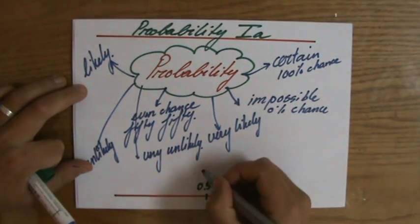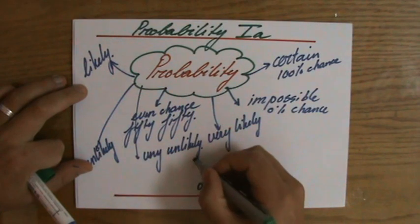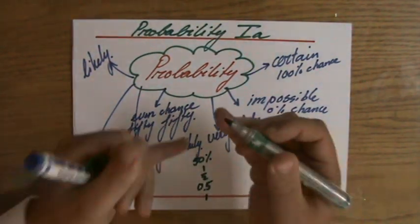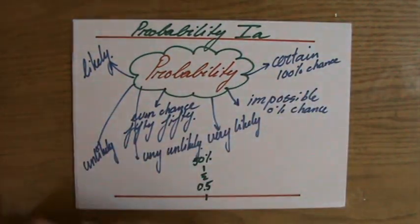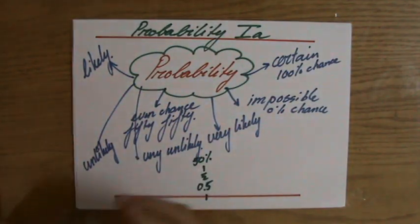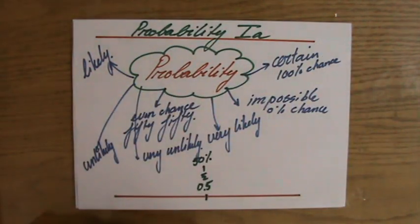Or a half, or 50%. That all means the same. You've learned that before. Percentages, decimals, fractions. They all describe a part of the whole.